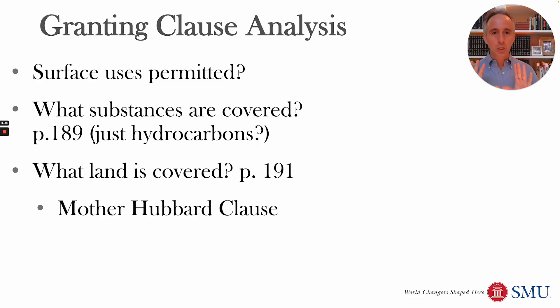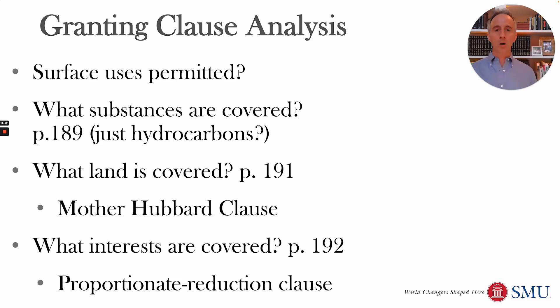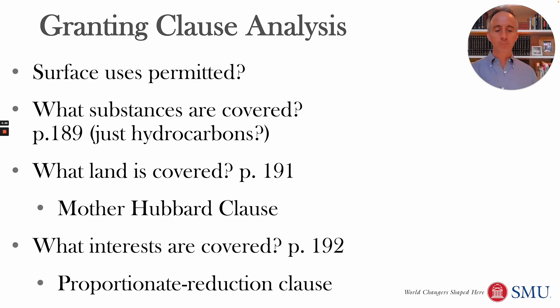You also want to look at what interests are covered. It could be the full 100% mineral interest in the land, but it could also be a smaller portion — maybe just a 1/20th mineral interest. Or maybe you think you have a 1/20th mineral interest but really all you have is a 1/40th mineral interest. In that case, something like a proportionate reduction clause would protect the oil and gas company that thought it was leasing a 1/20th interest but only got a 1/40th interest.